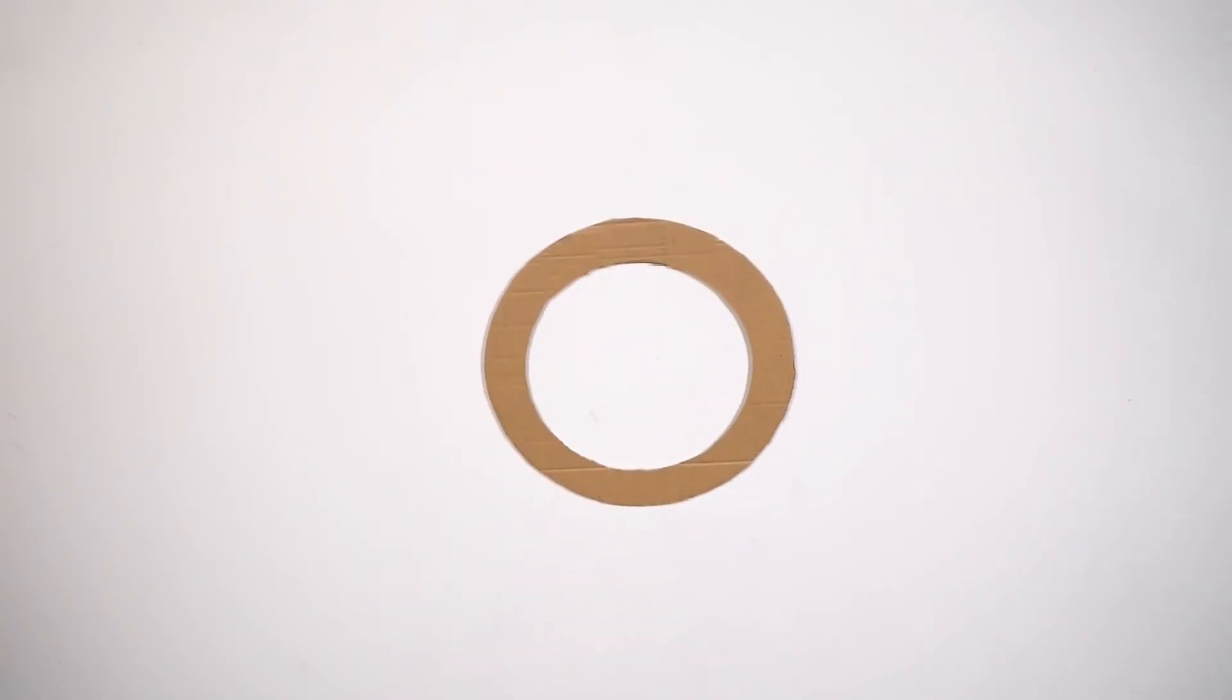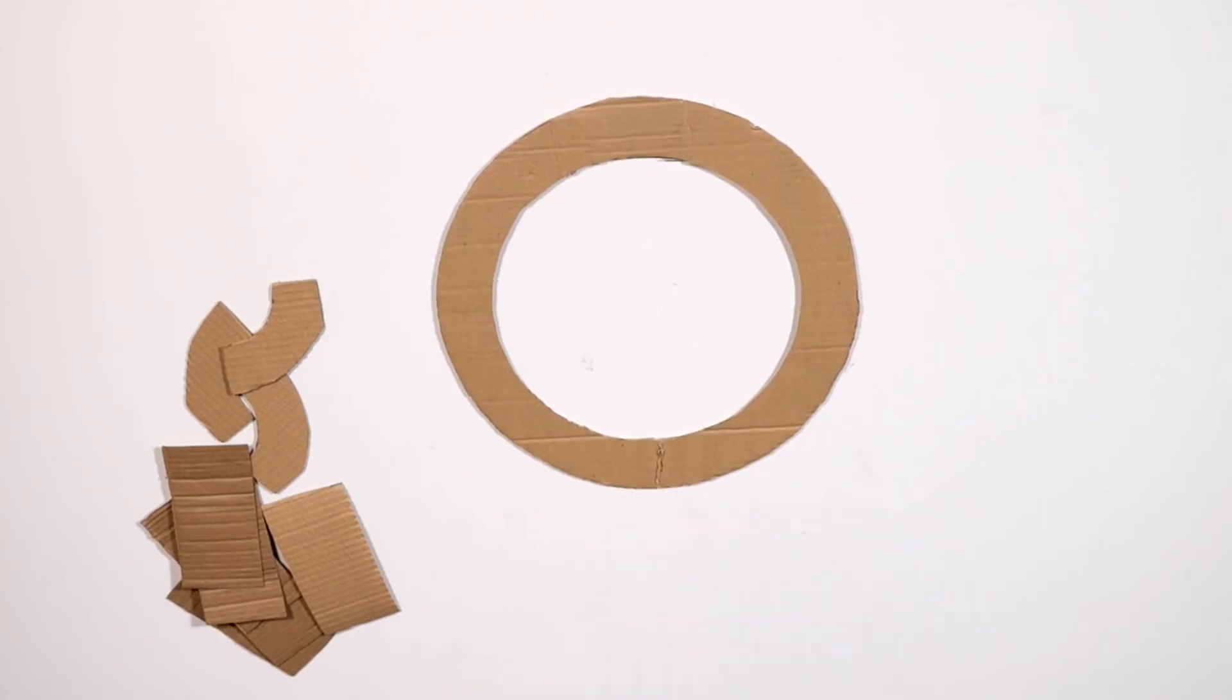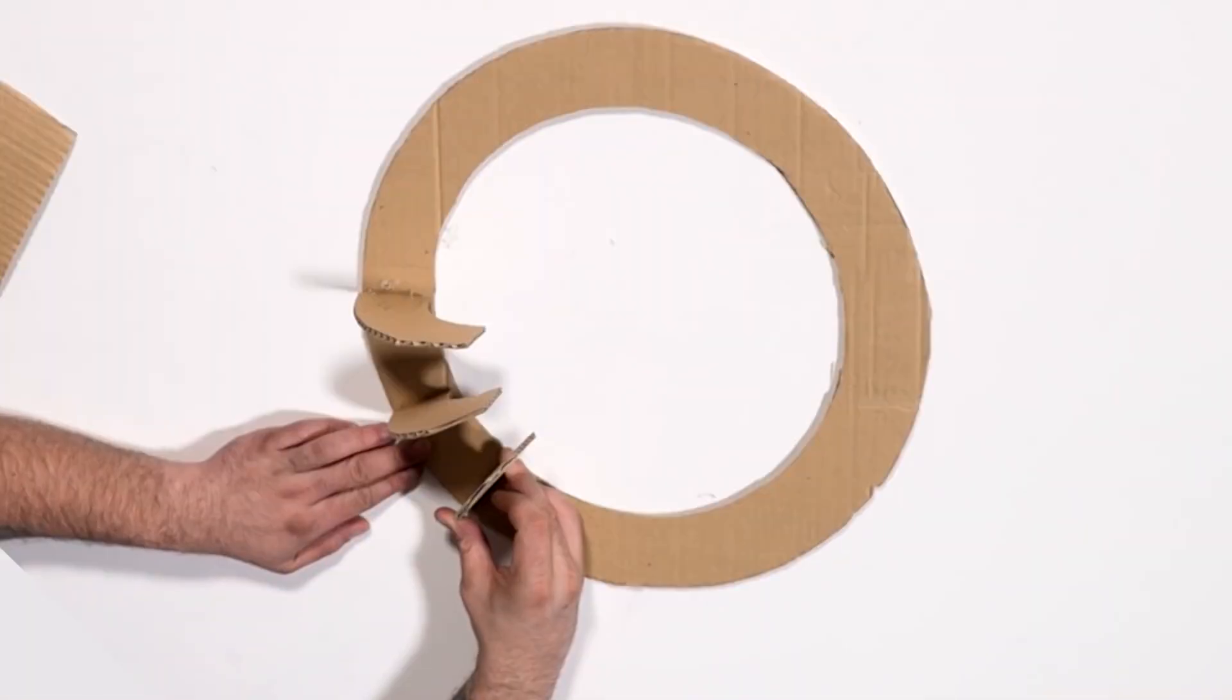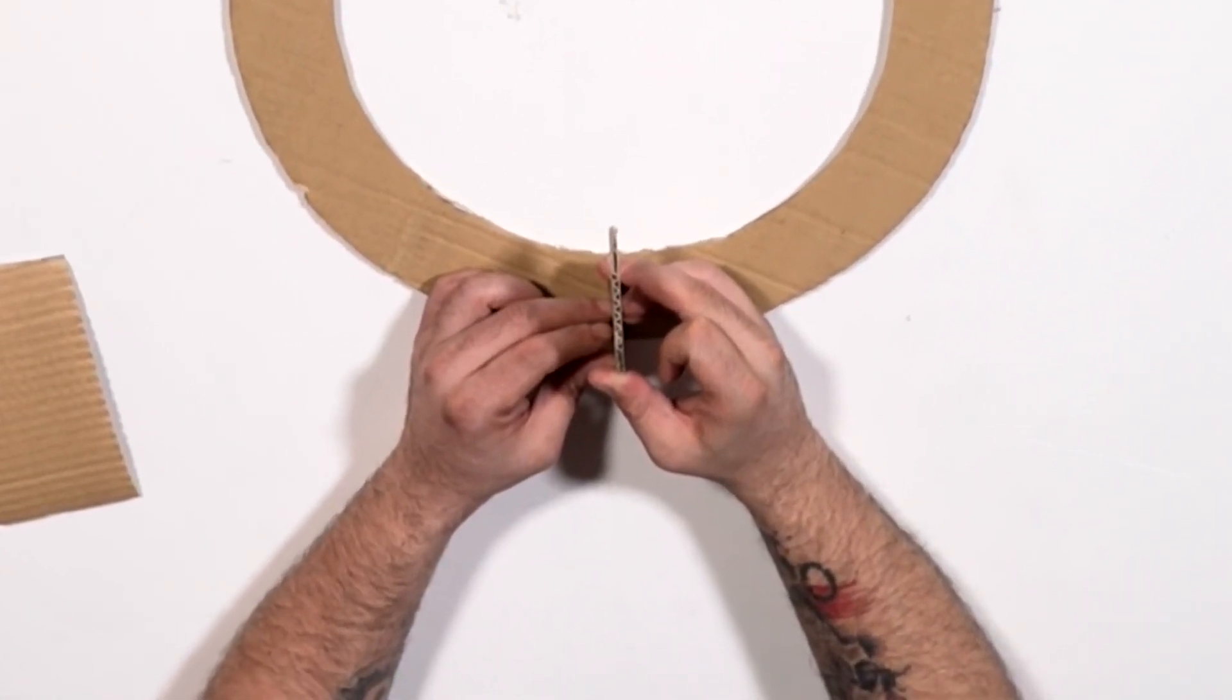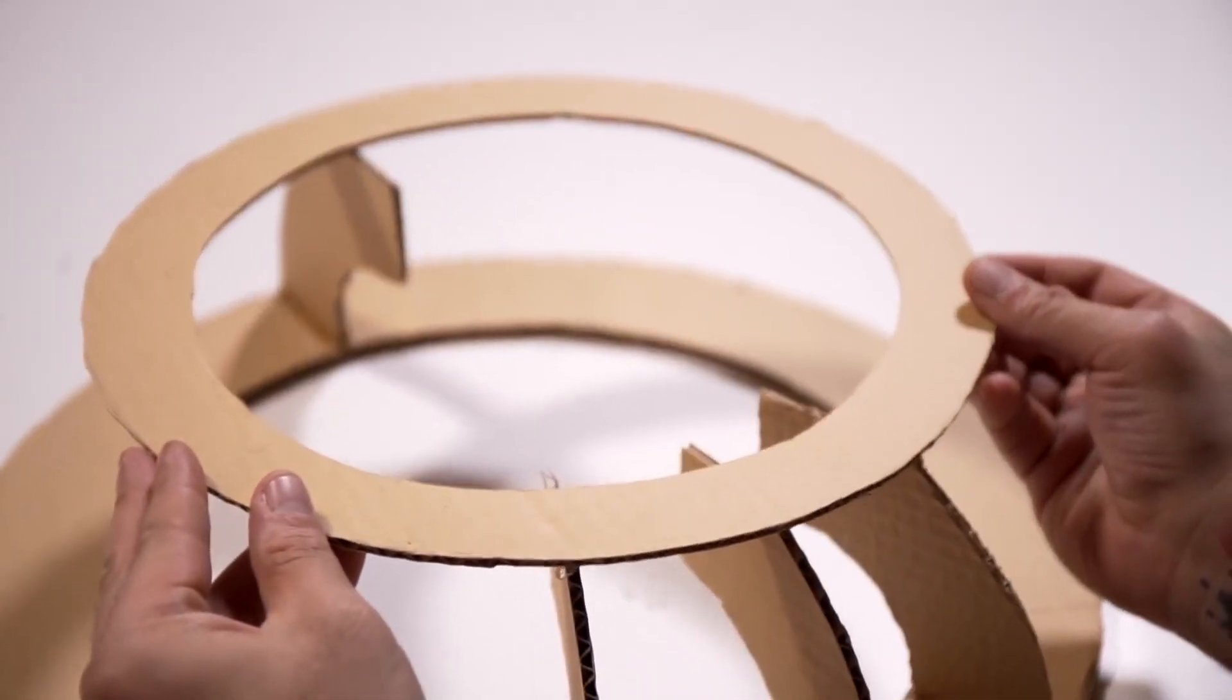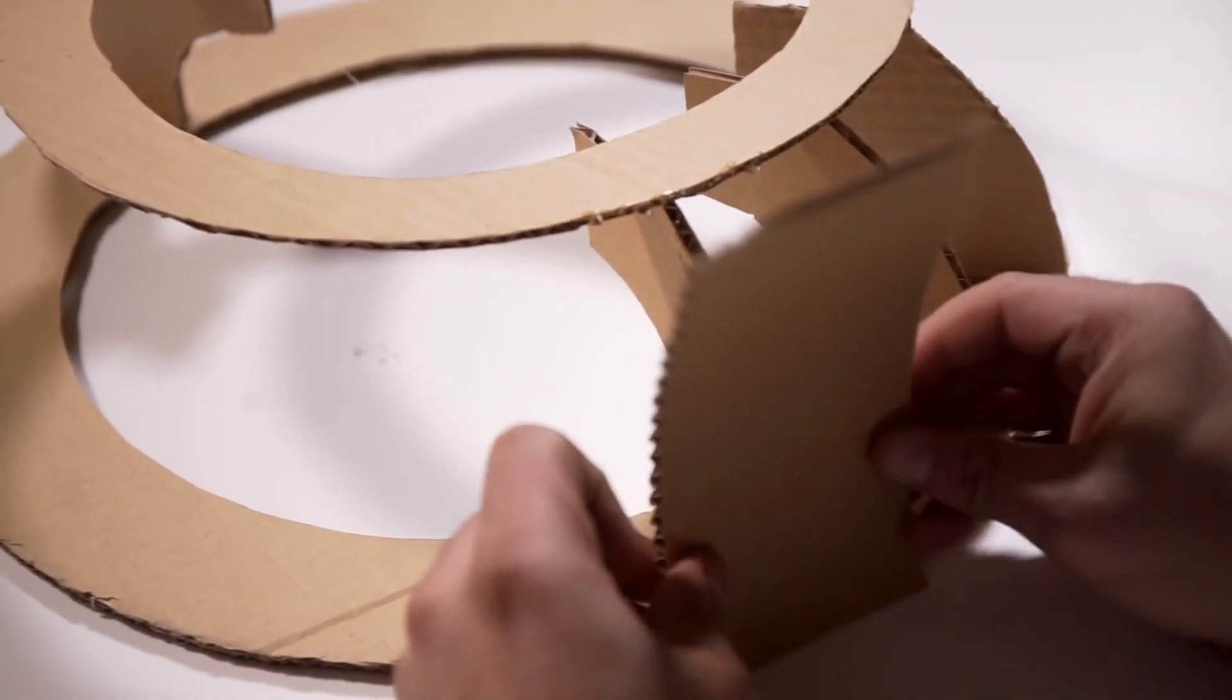Now we need lots of patience because we are going to stick them to the other pieces of cardboard. I know I am more hairy than Chewbacca, but do not let that distract you. Once again, use the corrugated cardboard to cover the skull of this titan.